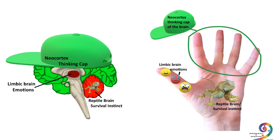This model is sometimes known as a three-parted model of the brain. It's based on the three main parts of the brain, starting from the most ancient to the most recently evolved part of the human brain.